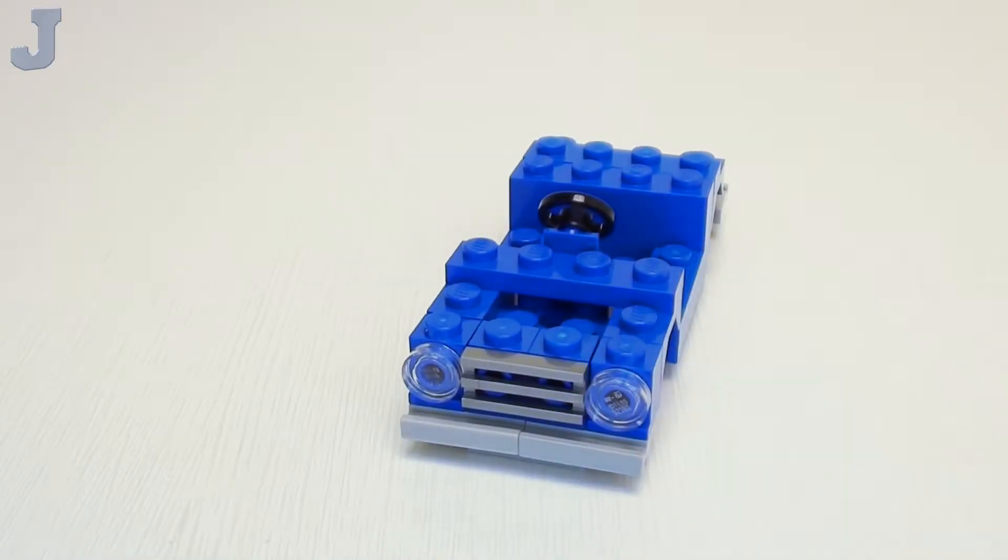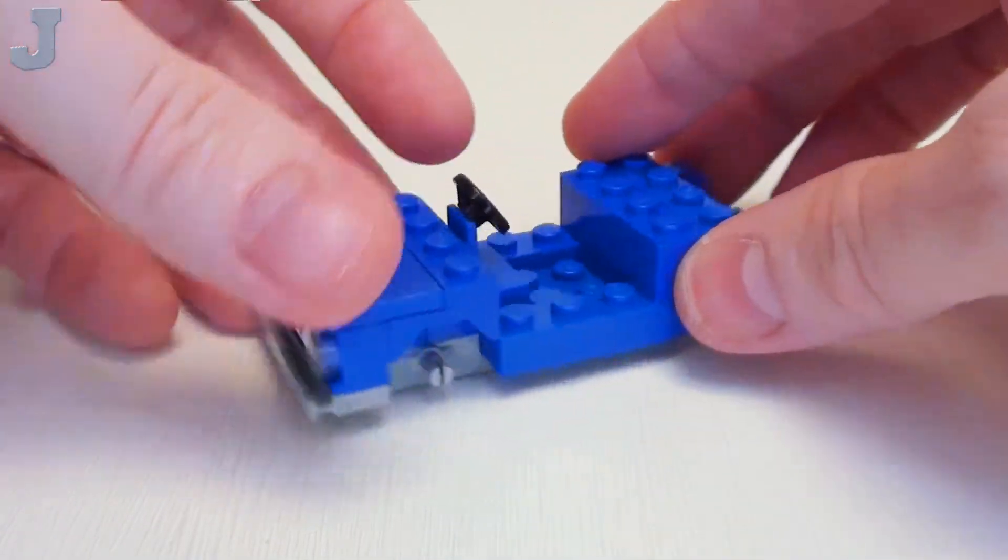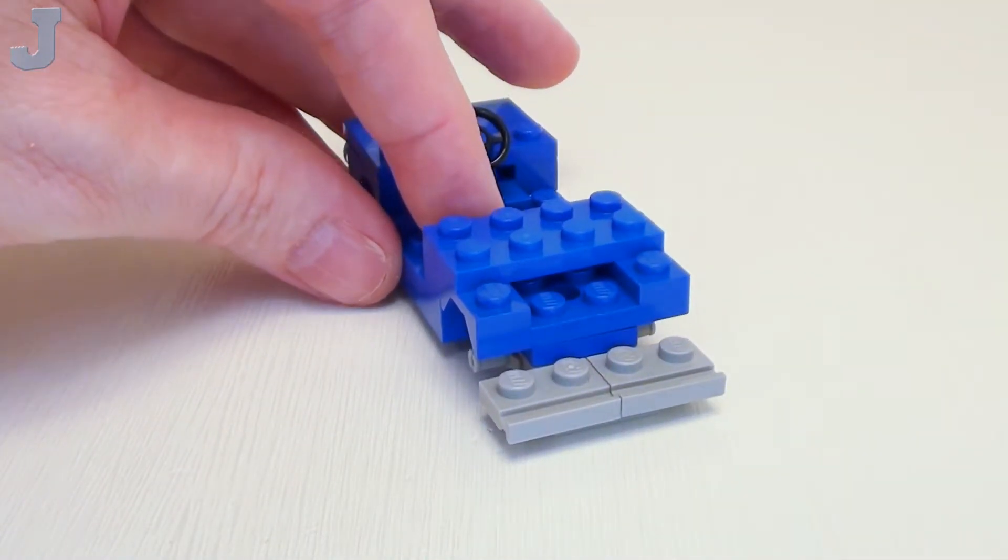And right in this area, a 2 by 4 flat tile. This is going to be our hood. Now we're going to focus our attention on the rear. Right in the center,